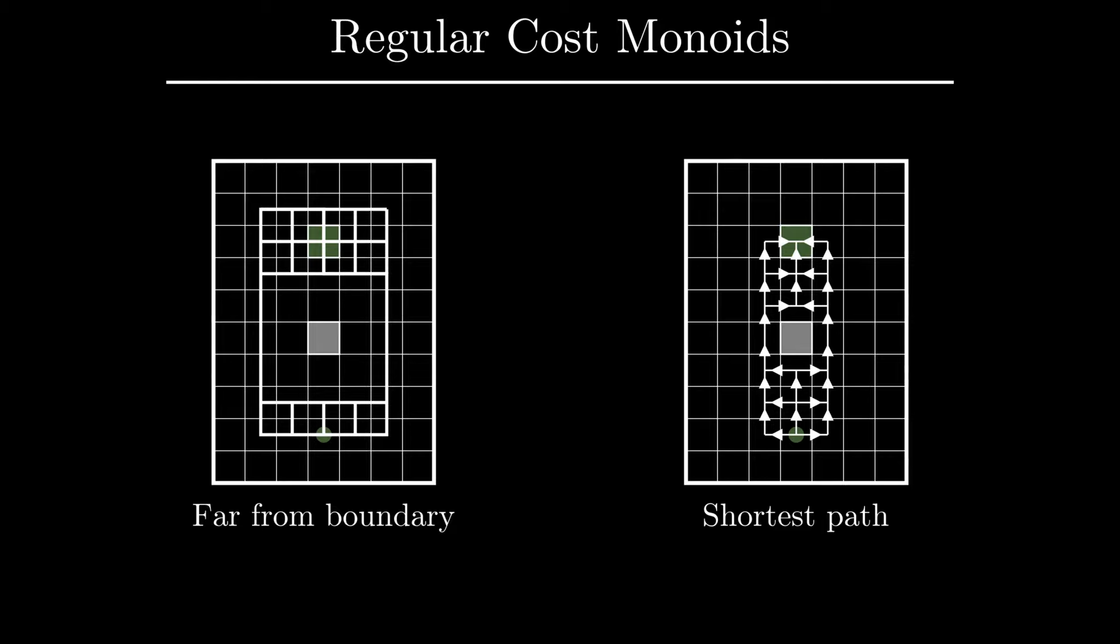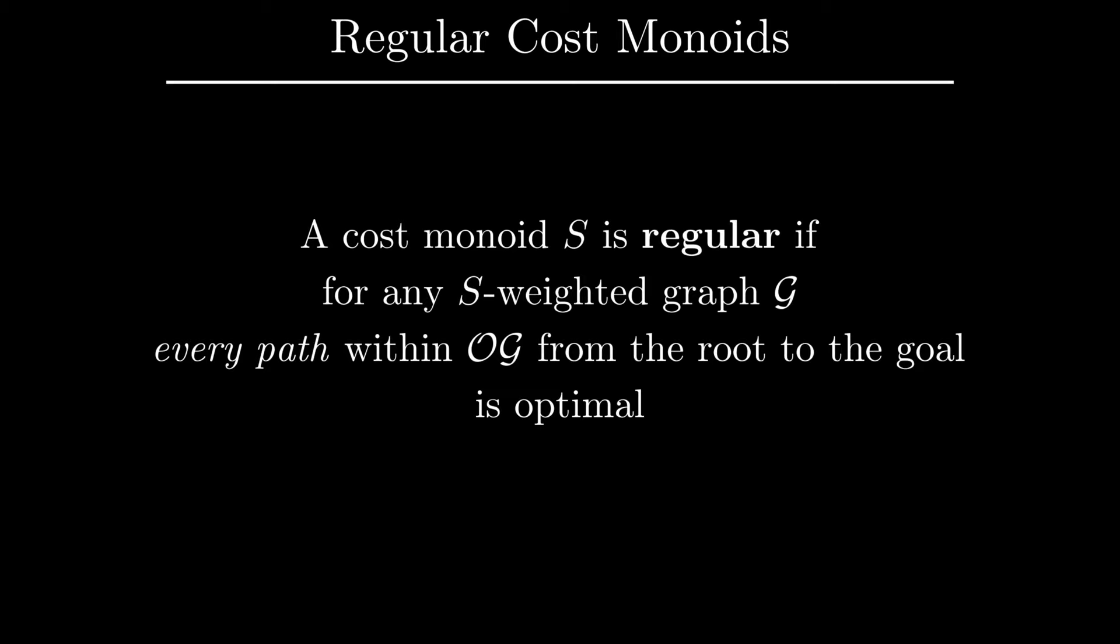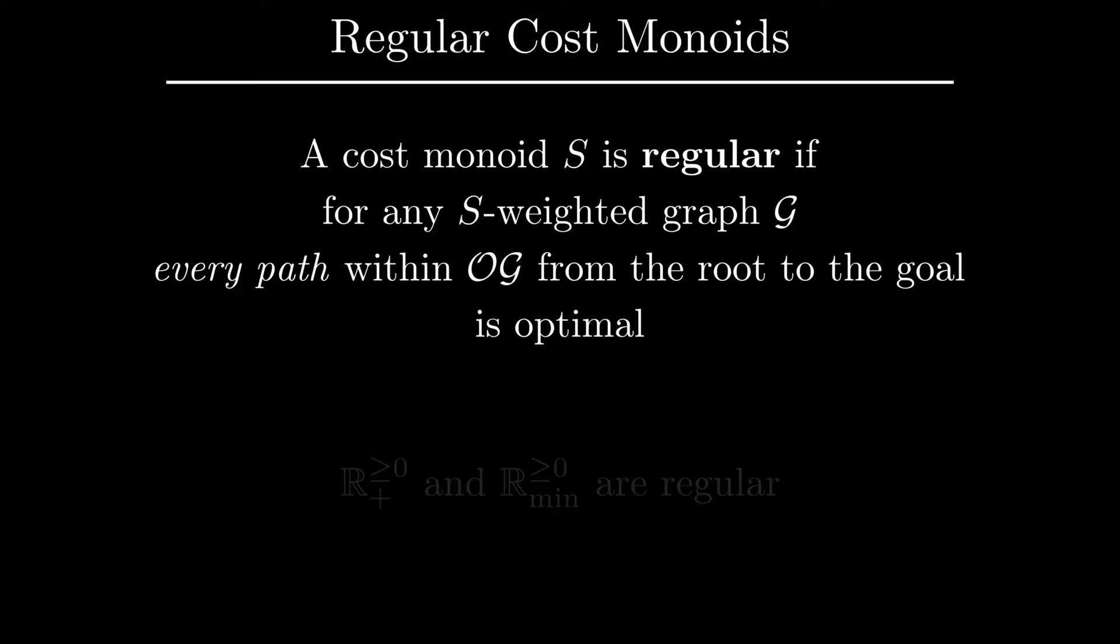Even though the graphs in these illustrations are rather simple, this phenomenon is general, and for these two types of costs, any path from the root to the goal in any optimal subgraph is itself optimal. This motivates the notion of a regular cost monoid, and our discussion can be summarized by saying that R_plus and R_min, the two cost monoids we use throughout this video, are regular.